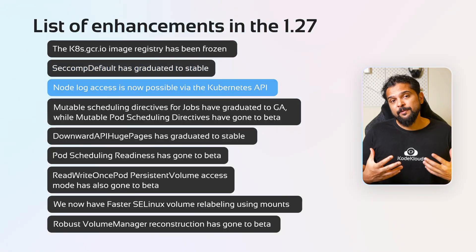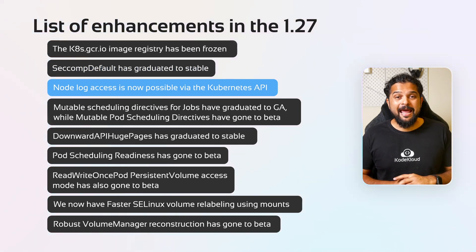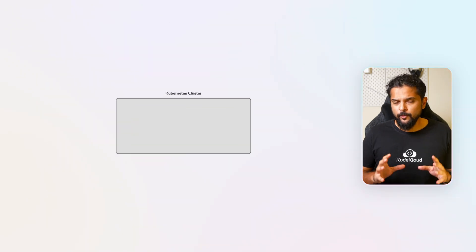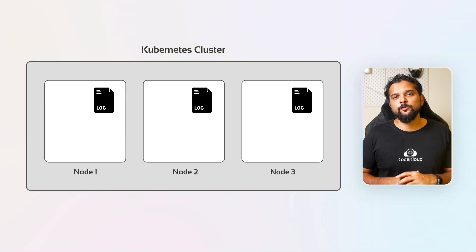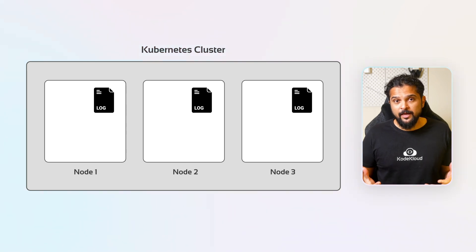The next major feature is a new API available for accessing logs from the nodes. A node is a control plane or worker machine that's part of the Kubernetes cluster. Node logs refer to the log data generated by a particular node, which can be helpful for debugging issues that arise in services running on that node. When services running on a node encounter issues, cluster administrators may find it challenging to identify the problem, typically needing to SSH or RDP into the node to examine service logs.